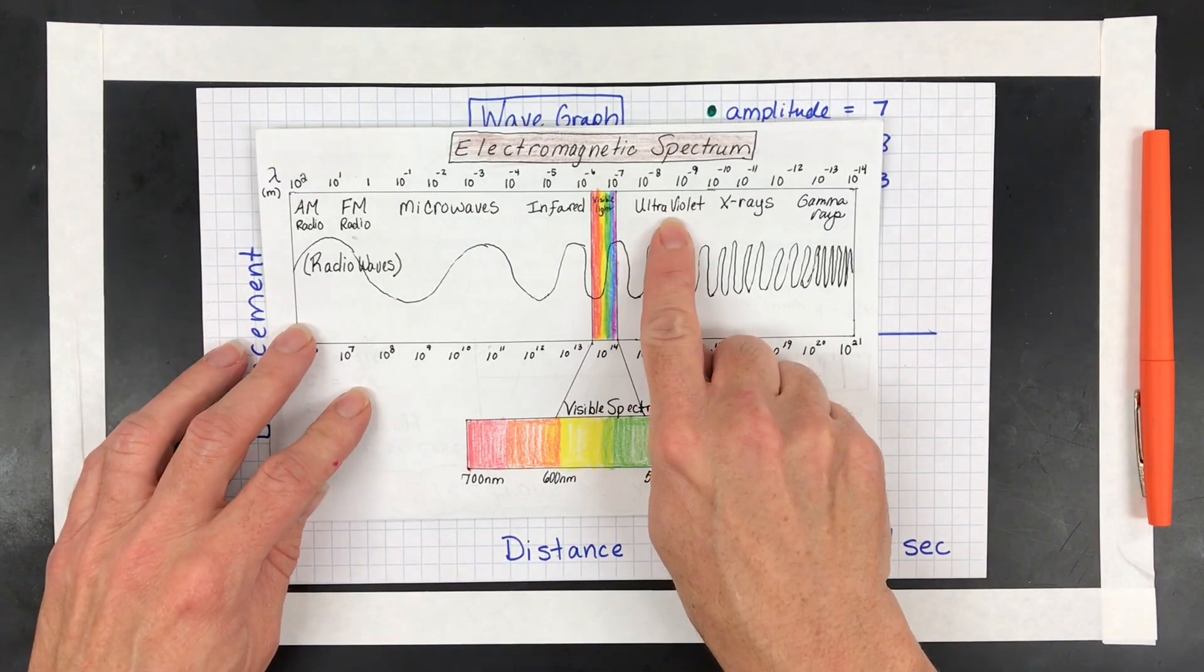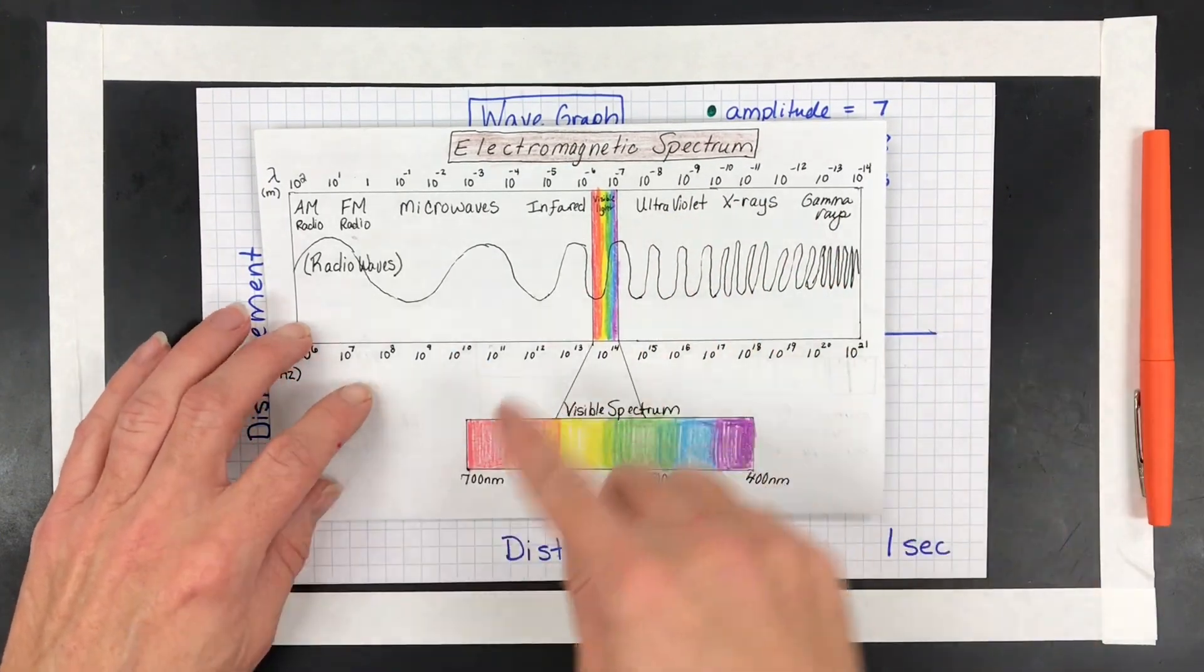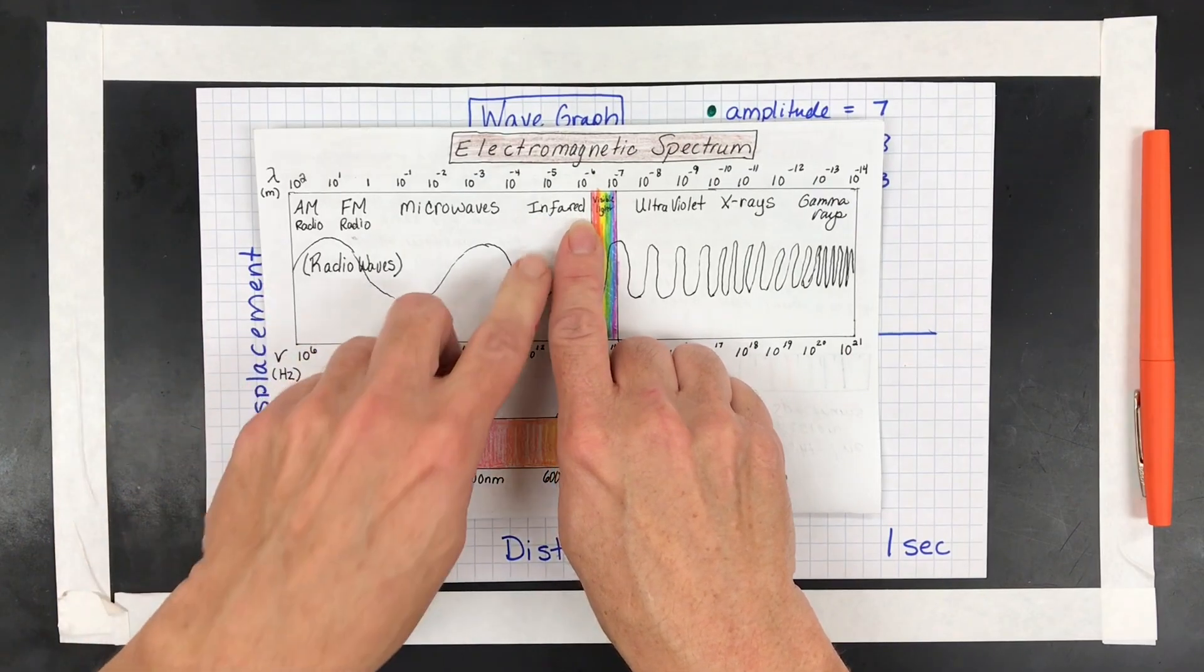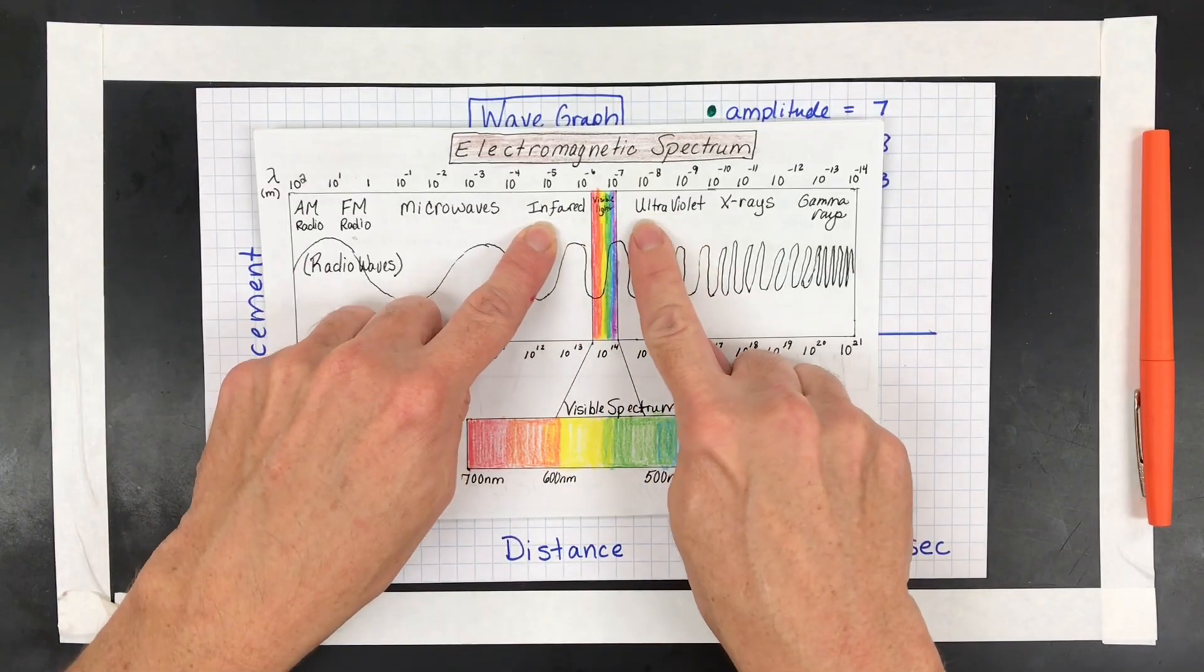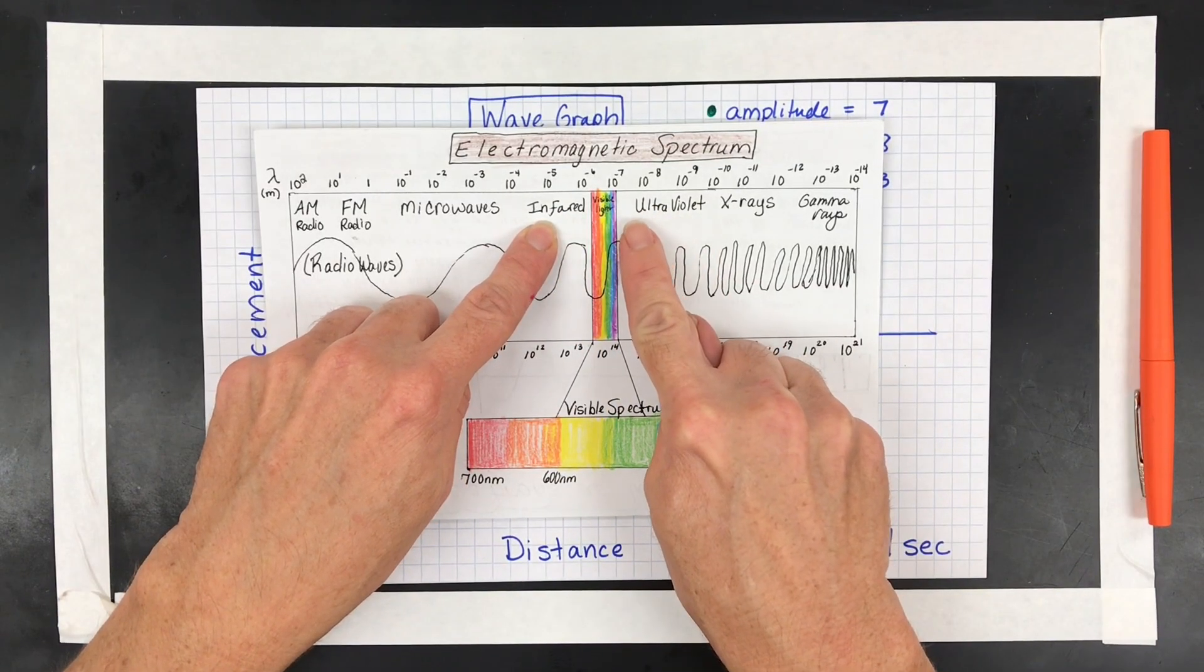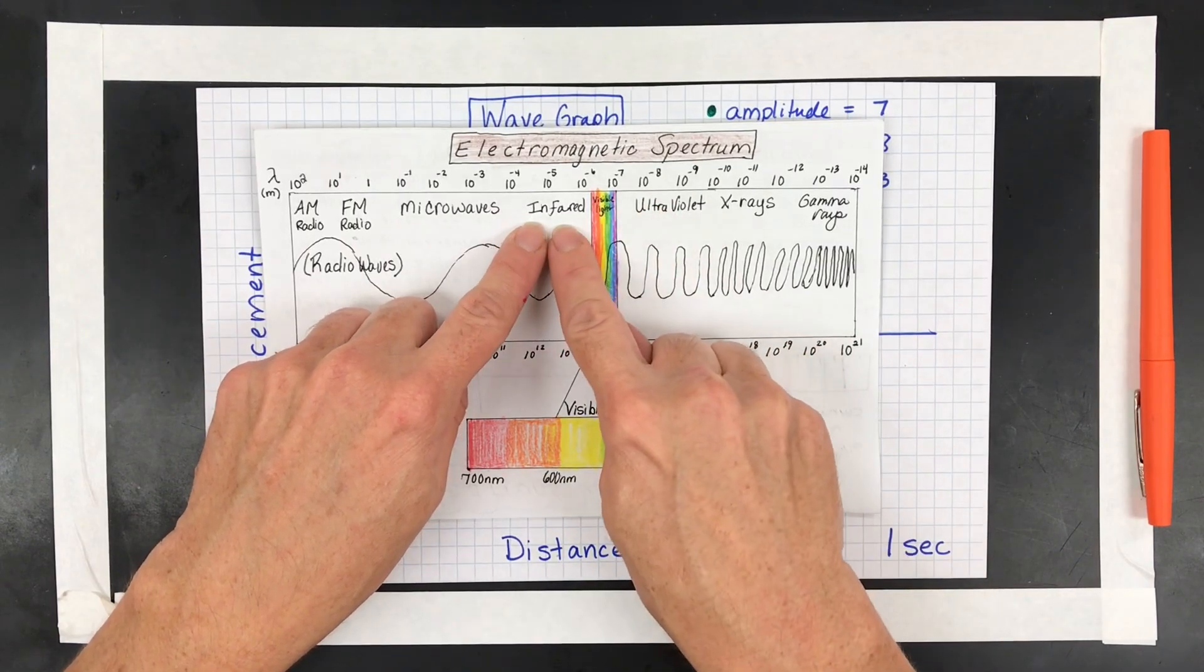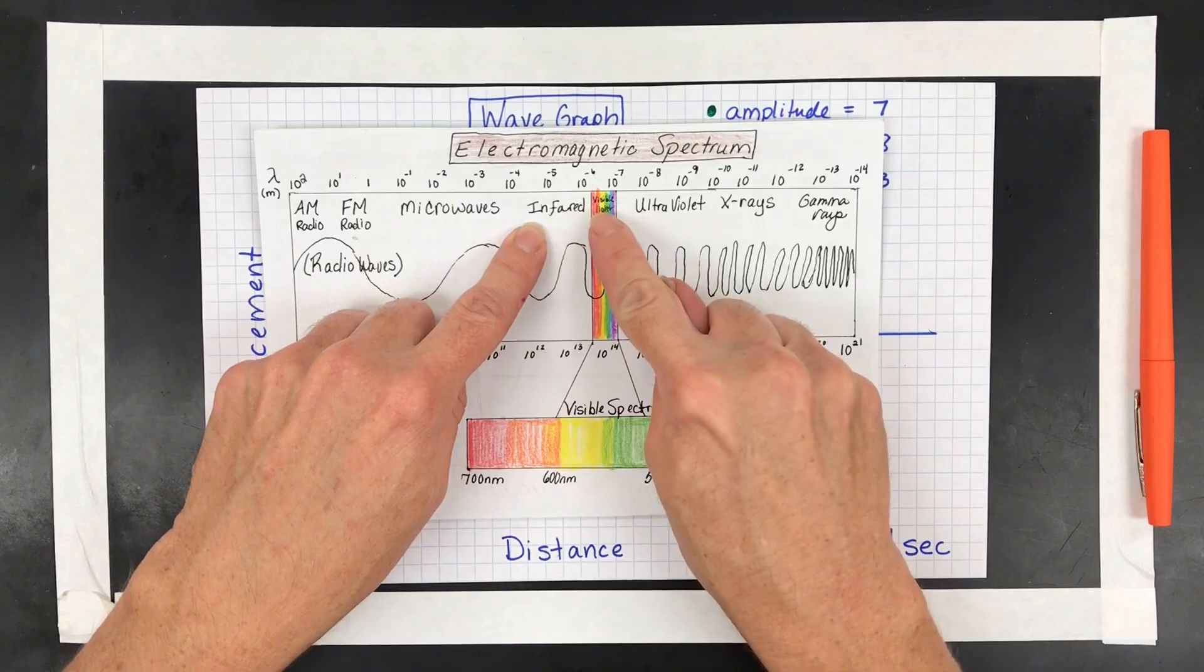The next up is ultraviolet. And then x-rays and gamma. And on the other side, kind of makes sense, infrared, which means less than red, is the type of electromagnetic radiation that's lower than red. So ultraviolet is a higher energy, shorter wavelength than violet. And infrared, less than red, is a longer, lower energy wavelength than red. So it kind of helps you know who's on each side of the spectrum.